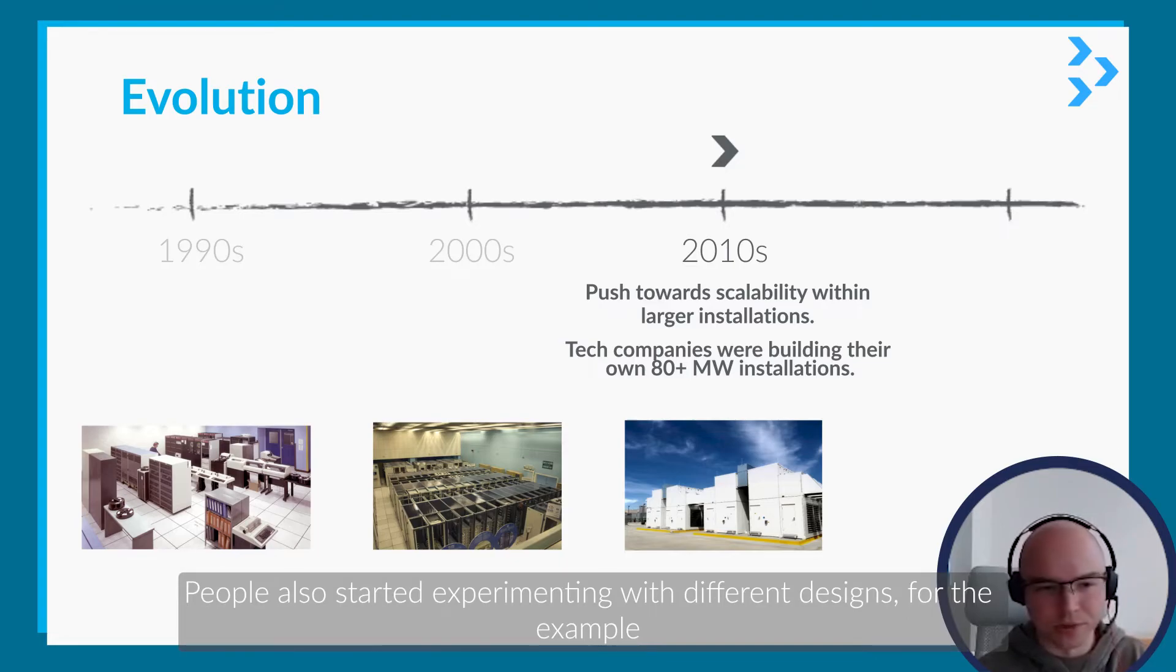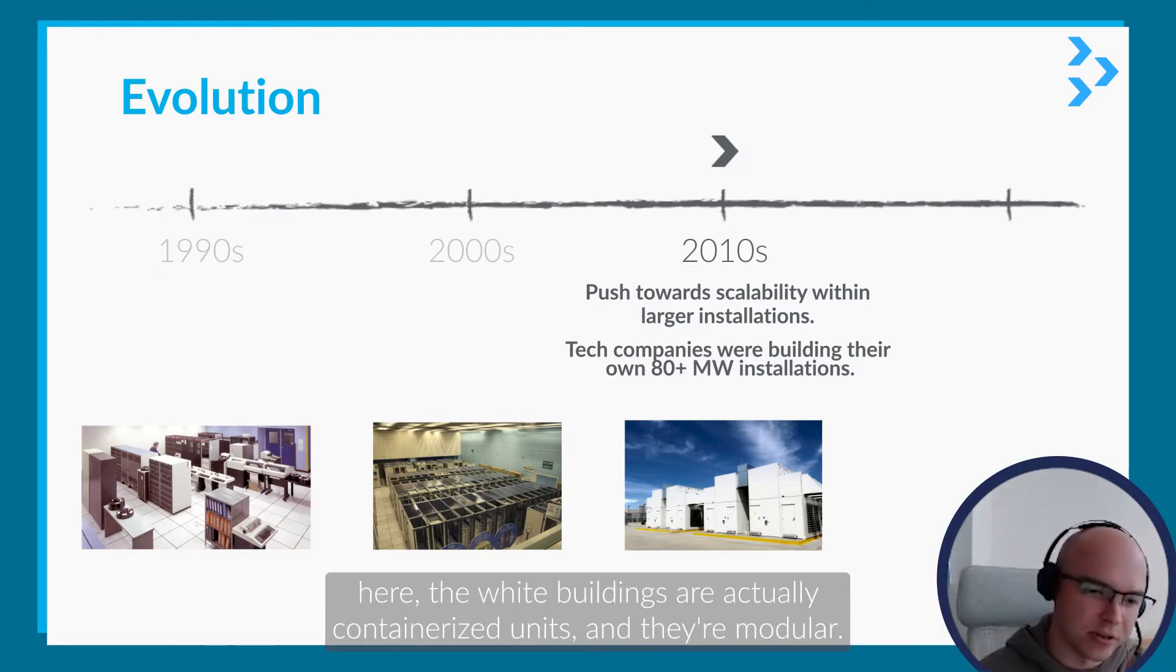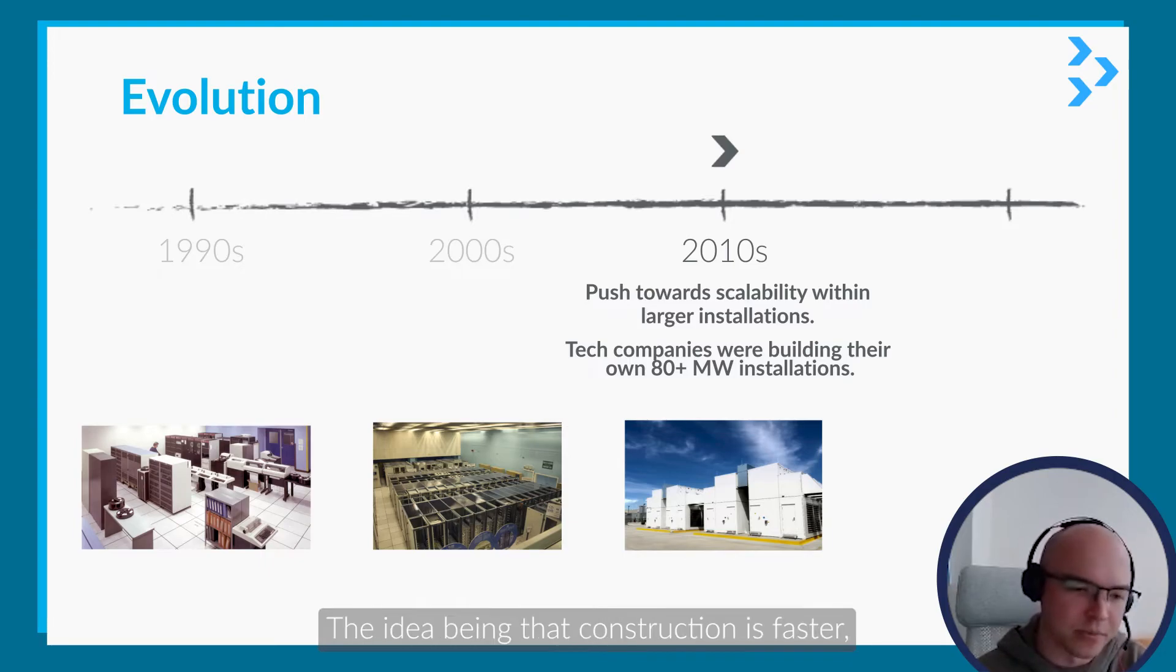People also started experimenting with different designs. The example here—the white buildings—are actually containerized units and they're modular. The idea being the construction is faster, it's easy to get up and running, and easier to maintain.